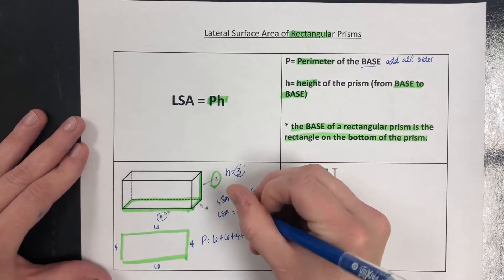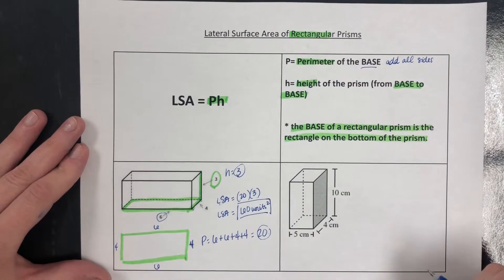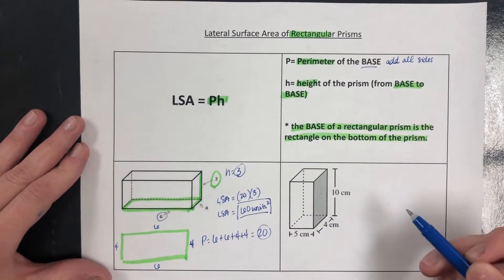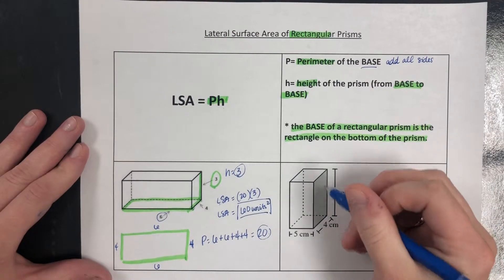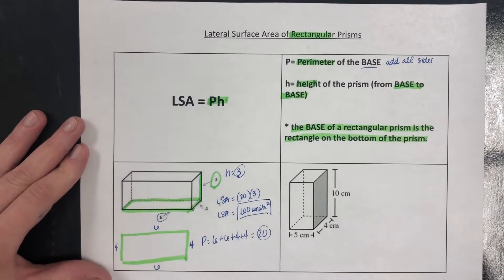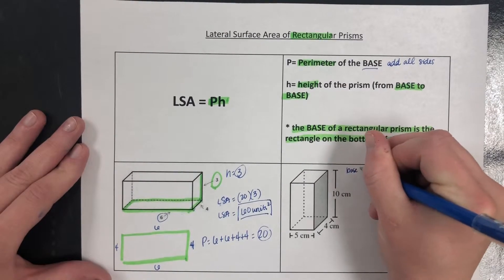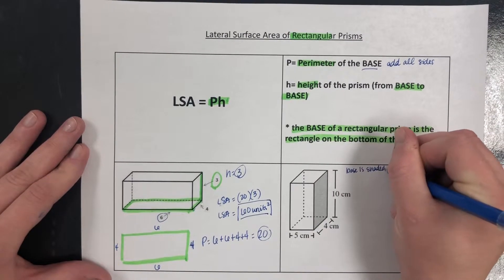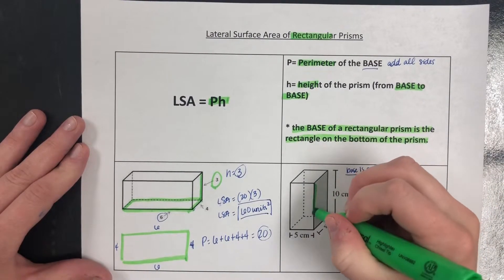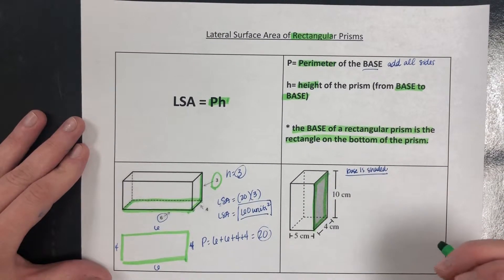For this next one, it has a shaded box there. What we'll assume is that the shaded box is now our base, because sometimes on questions they'll say the base of the figure is shaded. Base of figure is shaded, base is shaded. That means that our shaded rectangle this time is going to be the base, not the bottom like we have been doing.